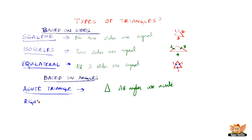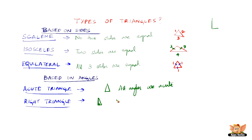We also have another kind of triangle called the right triangle. This is one of the most important forms of triangle, which has applications in a wide range. A right angle is 90 degrees, and a right triangle is a triangle which has one right angle in it. The third side joins the two sides of the right angle. So a triangle with one right angle is called a right triangle.